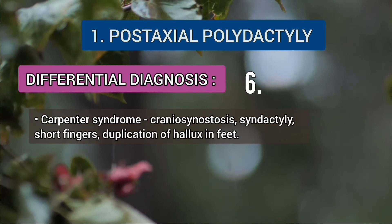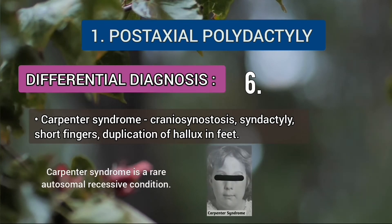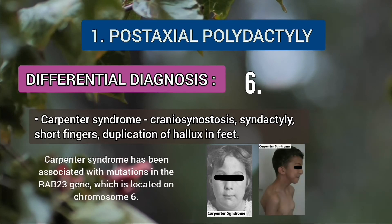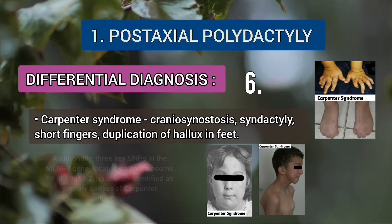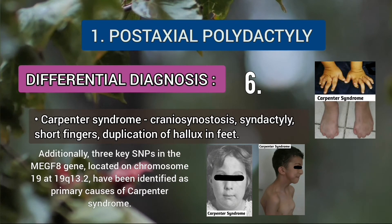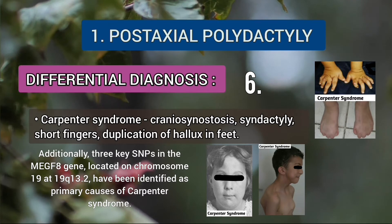Another important differential is Carpenter syndrome. It is a rare autosomal recessive condition associated with RAB23 gene mutation located on chromosome 6. In addition, three key single nucleotide polymorphisms in the MEGF8 gene located on chromosome 19 have also been identified as a primary cause of Carpenter syndrome.